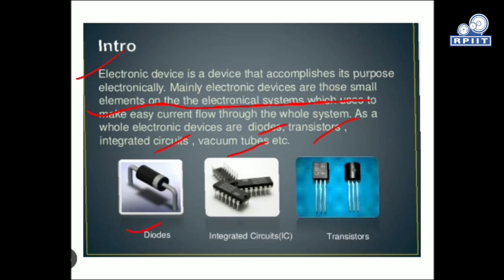A diode looks like this. It is a unidirectional device — it can either be forward biased or reverse biased. An integrated circuit is the combination of different circuits where different ICs are connected and pointed to a pin number. Similarly, a transistor is a high switching or amplifying device and is also an active component.